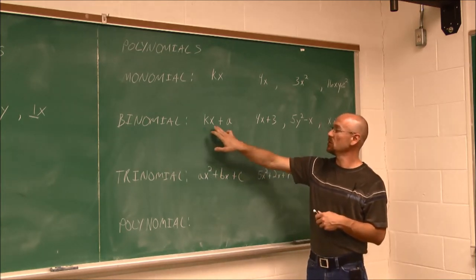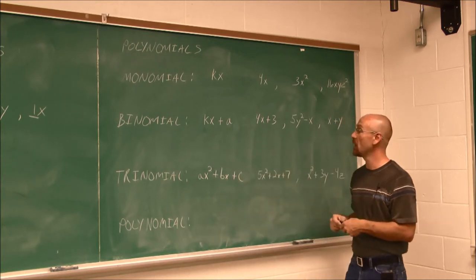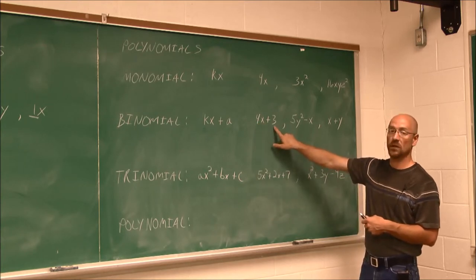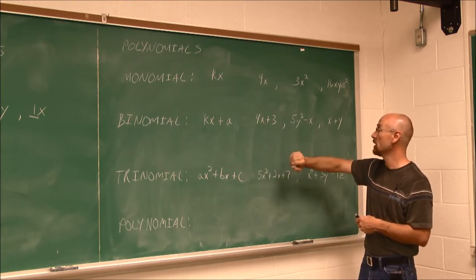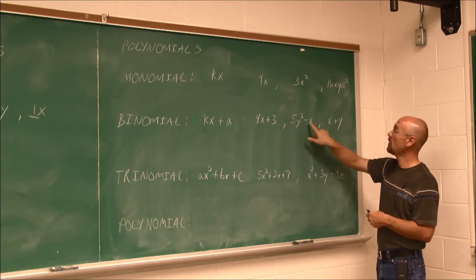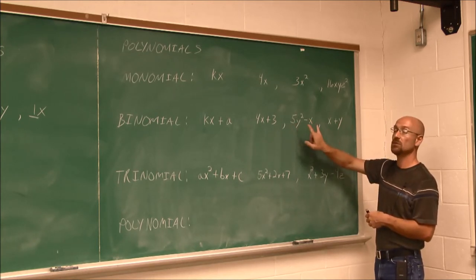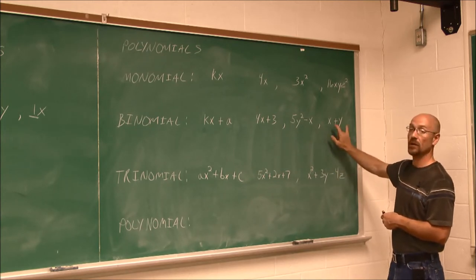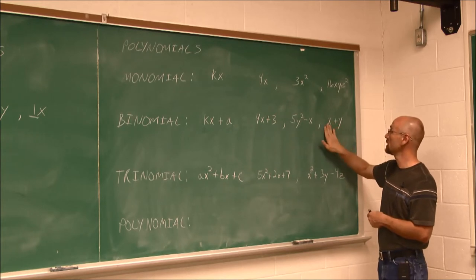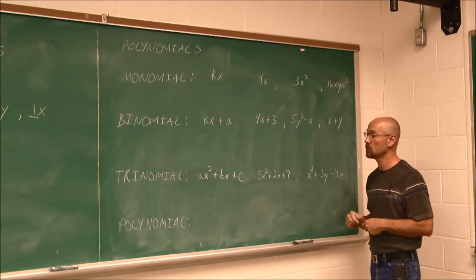Here, we have our binomials, which is two terms separated by addition or subtraction. We see, OK, we have this term here, which is 4x, and we have this term here, which is a constant, 3. This one here, we have 5y squared minus x, so we have two terms. That's a binomial. Here, we have x plus y. We have two variables. This is a binomial, because this term is different than this term. They're separated by addition or subtraction.